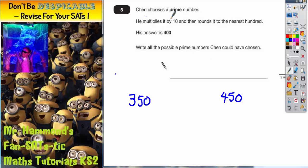It says he multiplies it by 10 and then rounds it to the nearest 100. So we need to work backwards to find the number. We're going to divide by 10. If we divide by 10, we've got 35 and 45. So we know that our prime number needs to lie between 35 and 45.